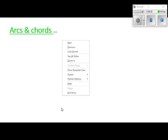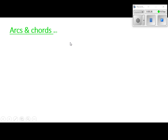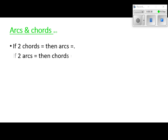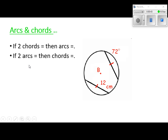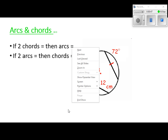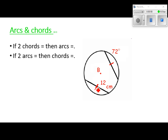So, arcs and chords. A lot of this we've covered already. The first thing: if you have two chords that are equal, then the arcs that they cut off have to be equal. And the converse also works — if two arcs are equal, then the chords have to be equal. So if these markings tell us these two chords are equal, then the two arcs they cut off have to be equal. If this arc is 72 degrees, this arc has to be 72 degrees. If this chord is 12 centimeters, this chord has to be 12 centimeters.